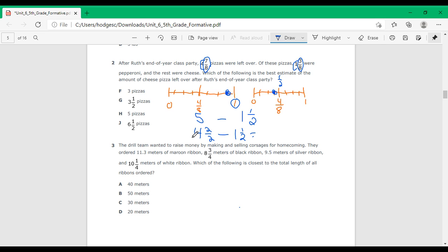Subtract your whole numbers. Four minus one equals three. Two minus one equals one. And your denominator stays the same. So three and a half pizzas are the cheese pizza leftover.